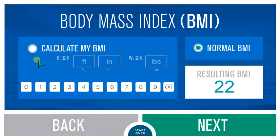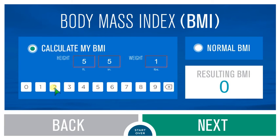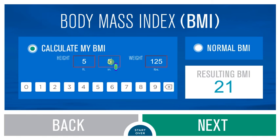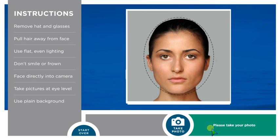Here the user enters height and weight for calculating body mass index. This is an optional input and will default to normal if no data is entered. To enter data, select the calculate button and enter the relevant information in the boxes for height and weight. In this example, a height of 5 feet 5 inches and weight of 125 pounds is entered. To correct an entry, press the appropriate box, then the back button and re-enter the correct information. Here we'll change 5 foot 5 to 5 foot 3.